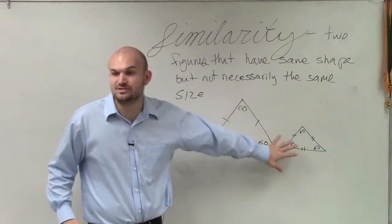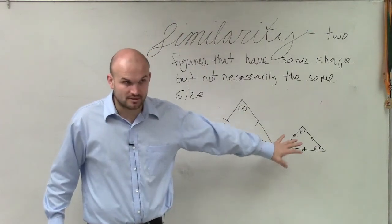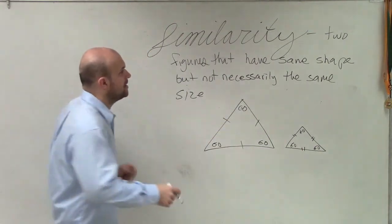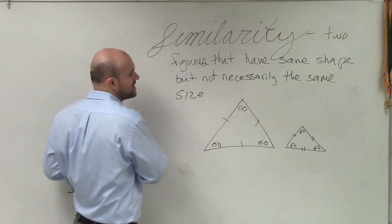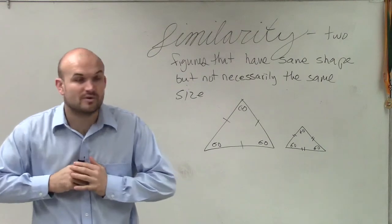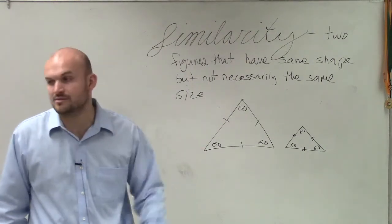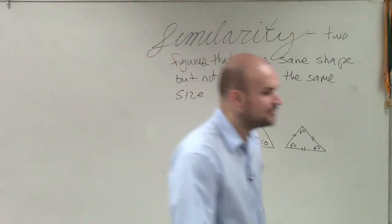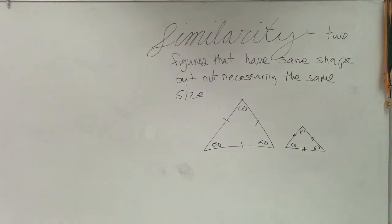So similarity, these two triangles are similar. They are not congruent. Similar. Two figures that have the same shape but not necessarily the same size. So if they are congruent, then they are similar as well. But the main important thing I want you guys to have is to understand when they're similar.